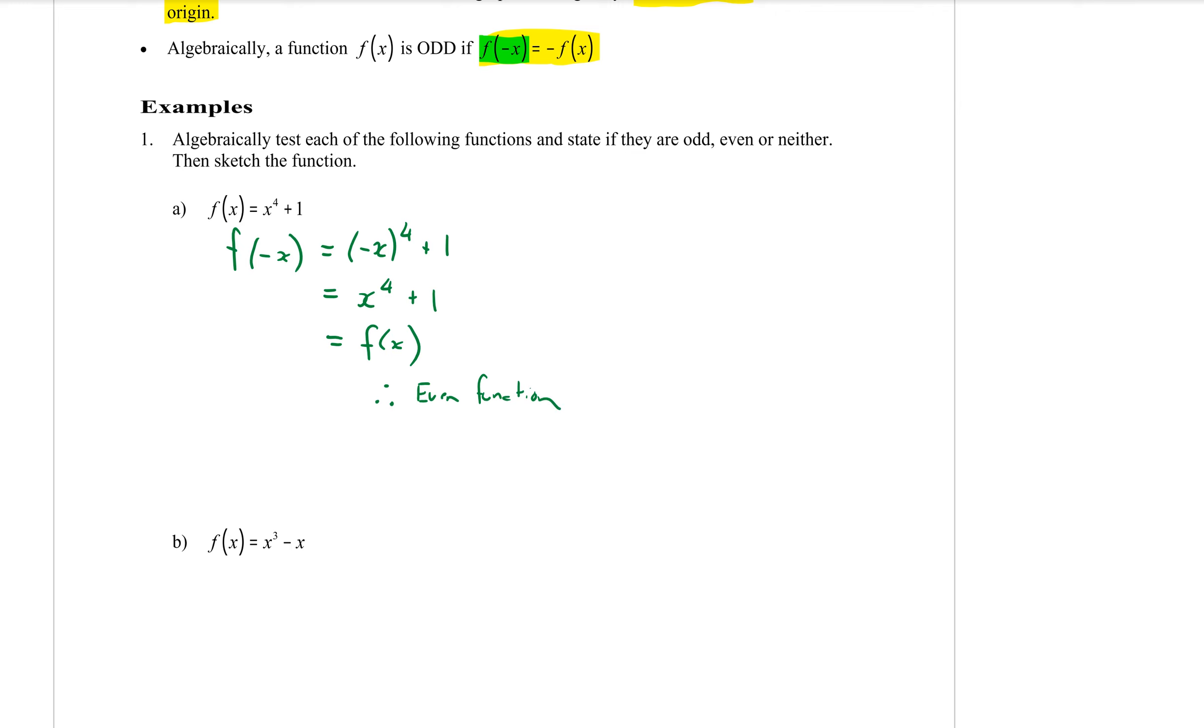Okay we also want to sketch that graph. Now the x to the power of 4 graph looks very similar to the parabola and adding 1 to it means that we'd be moving it one space up. So here's my cartesian plane. The vertex is going to be moved up one spot to 1 and then I would just need to test a point on either side to show the steepness of my parabola.